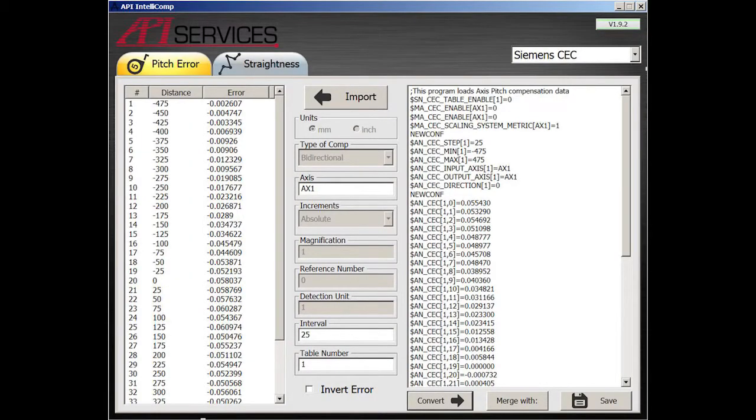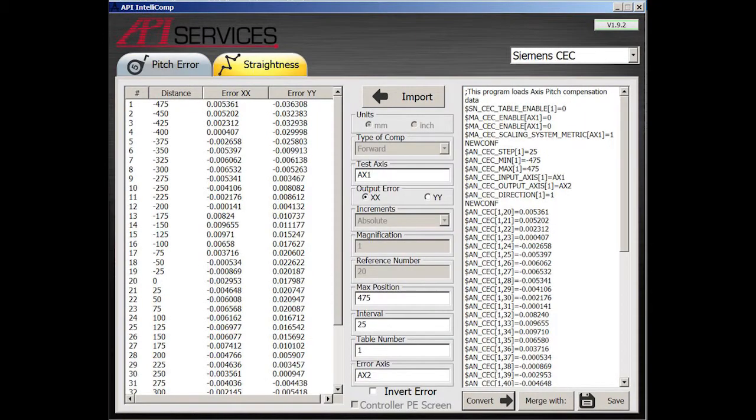After measurement is complete, API's IntelliCompt software easily formats your compensation files to painlessly upload onto your CNC.